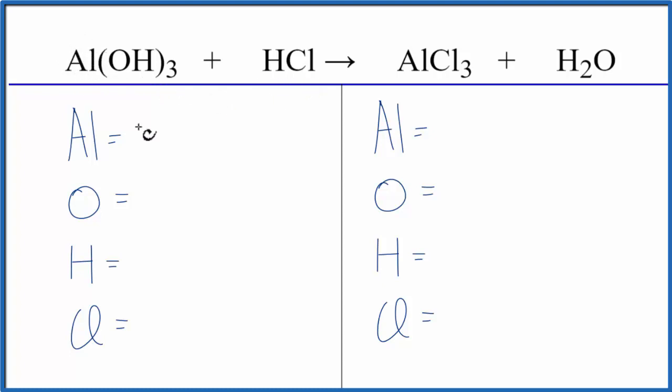Let's count the atoms up. We have one aluminum, and then this three applies to everything here in the parentheses. So we have three times the one oxygen. We have three oxygens.